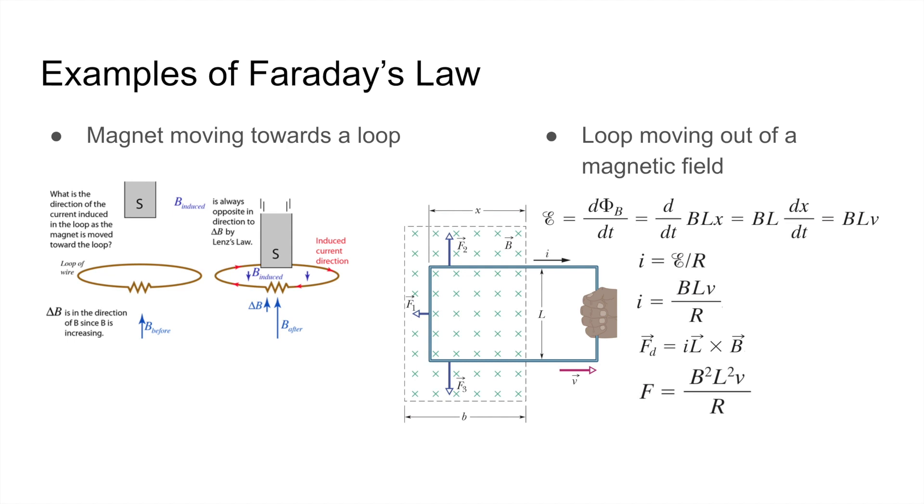goes up, which means that the magnetic flux pointing up will also go up. And since the induced current wants to oppose the change in magnetic flux, the induced magnetic field will be downwards, which means that, by the right-hand rule, the induced current direction will be clockwise, viewing from above.